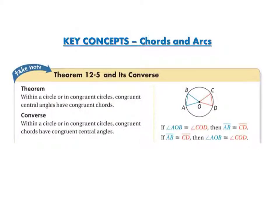Theorem 12-5 and its converse: the theorem states within a circle or in congruent circles, congruent central angles have congruent chords. The converse is within a circle or in congruent circles, congruent chords have congruent central angles.